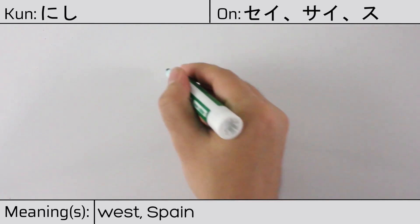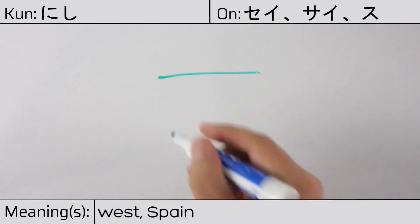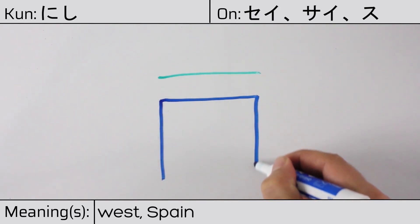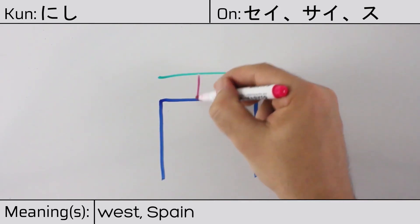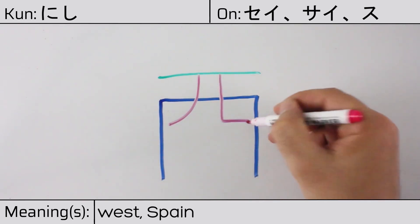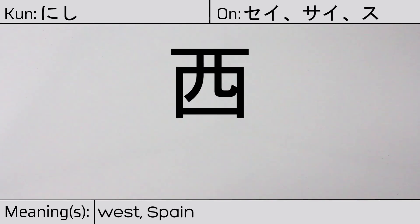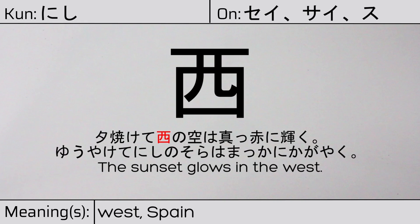This character is made up of the following radicals or parts: kanji ichi, kuchi or mouth, and hitoashi or the human leg radical. You can remember this kanji by the following hint: a dissident speaking on a podium in the west. Our example sentence is: 夕焼けて西の空は真っ赤に輝く — The sunset glows in the west.